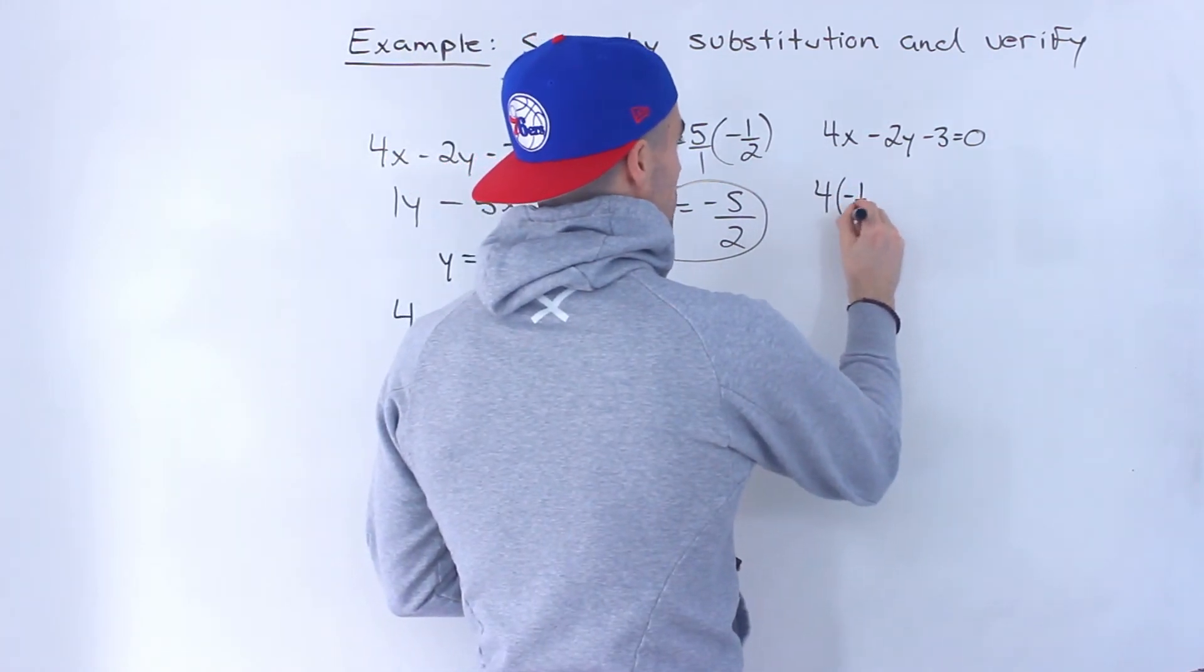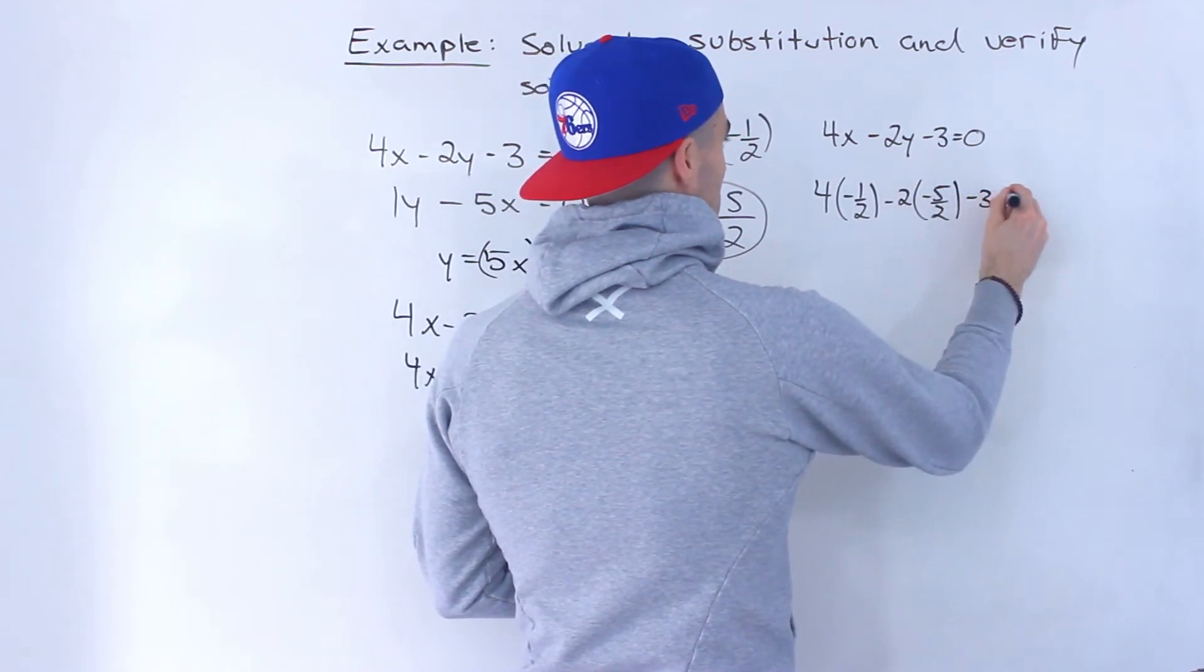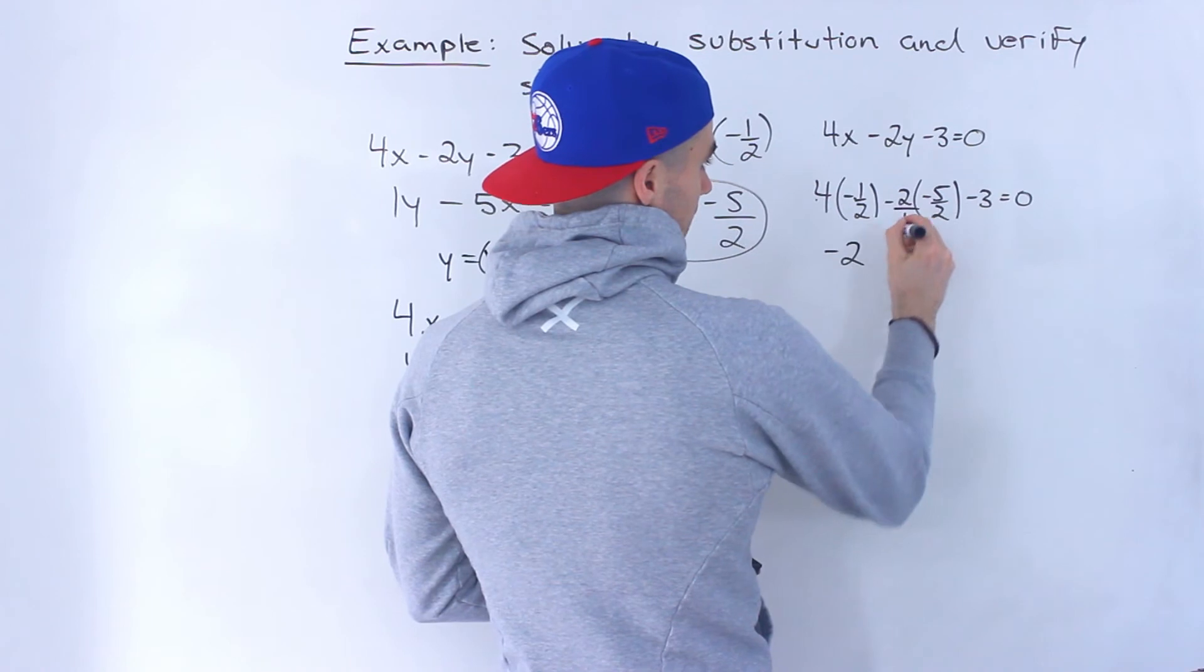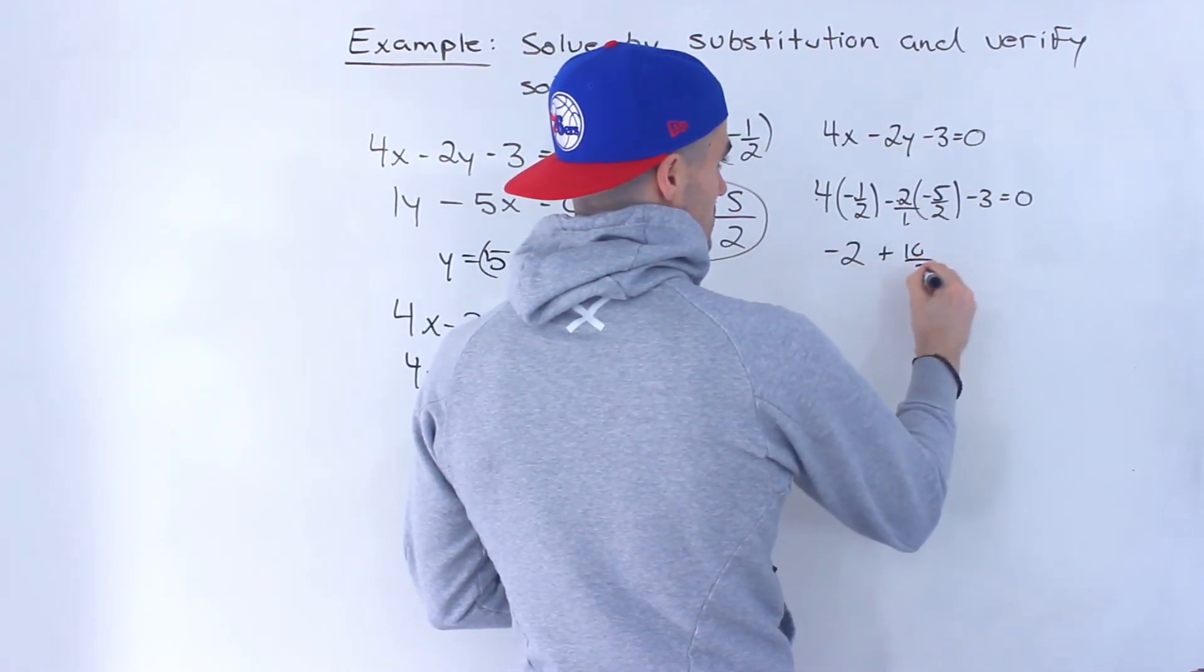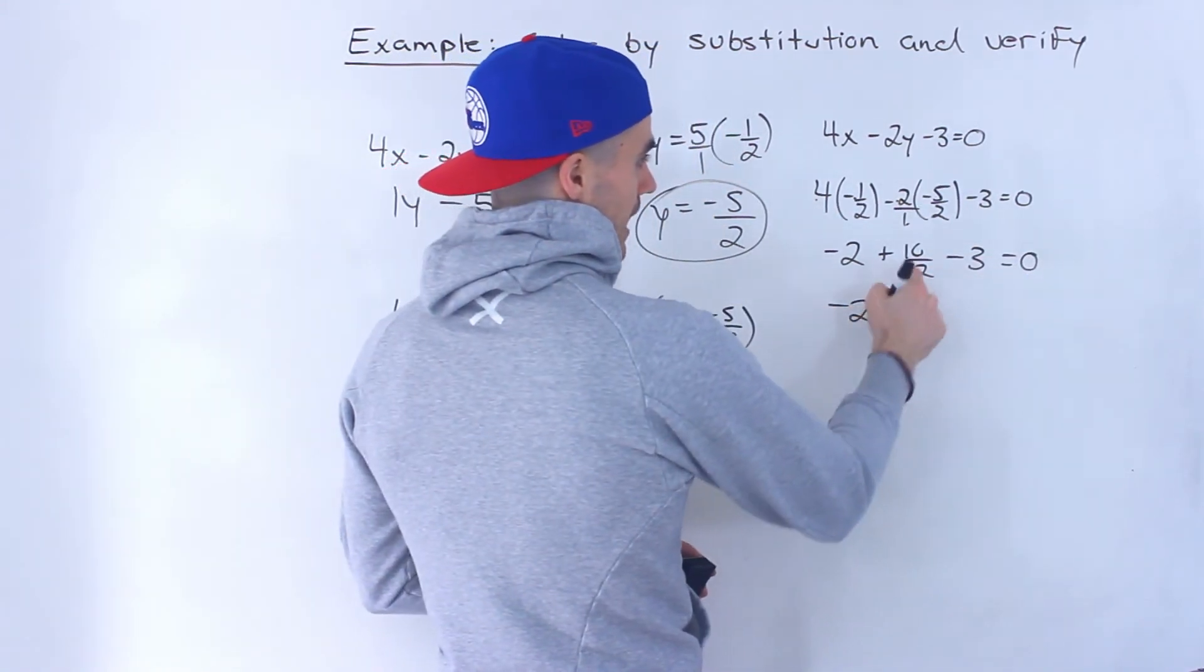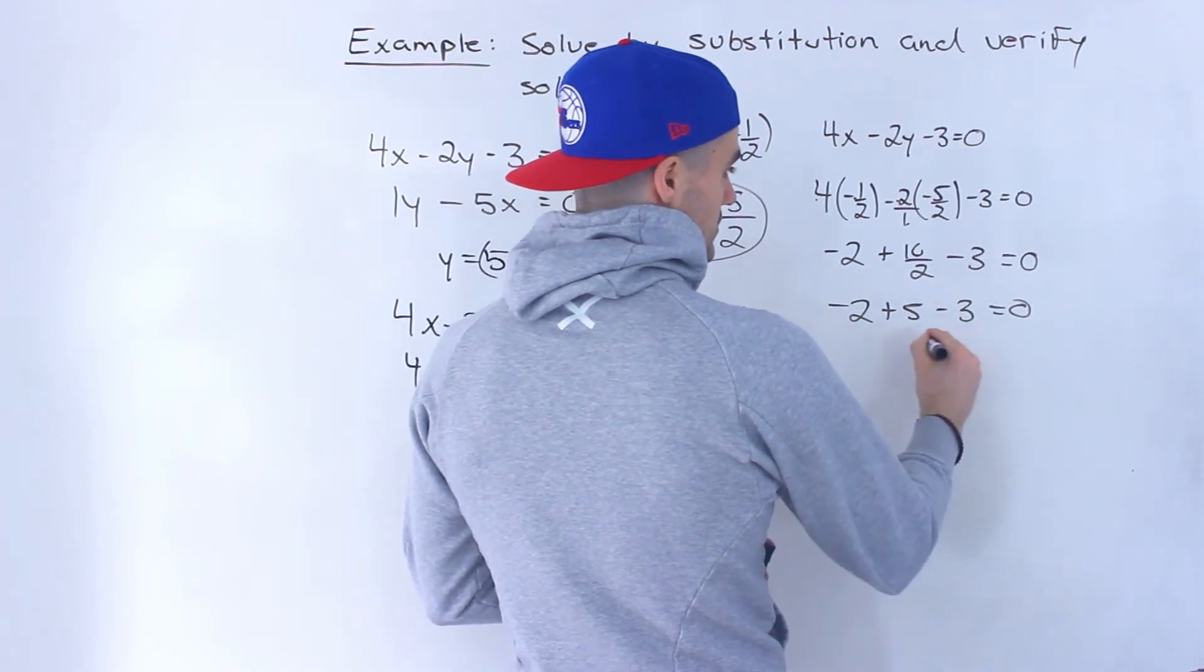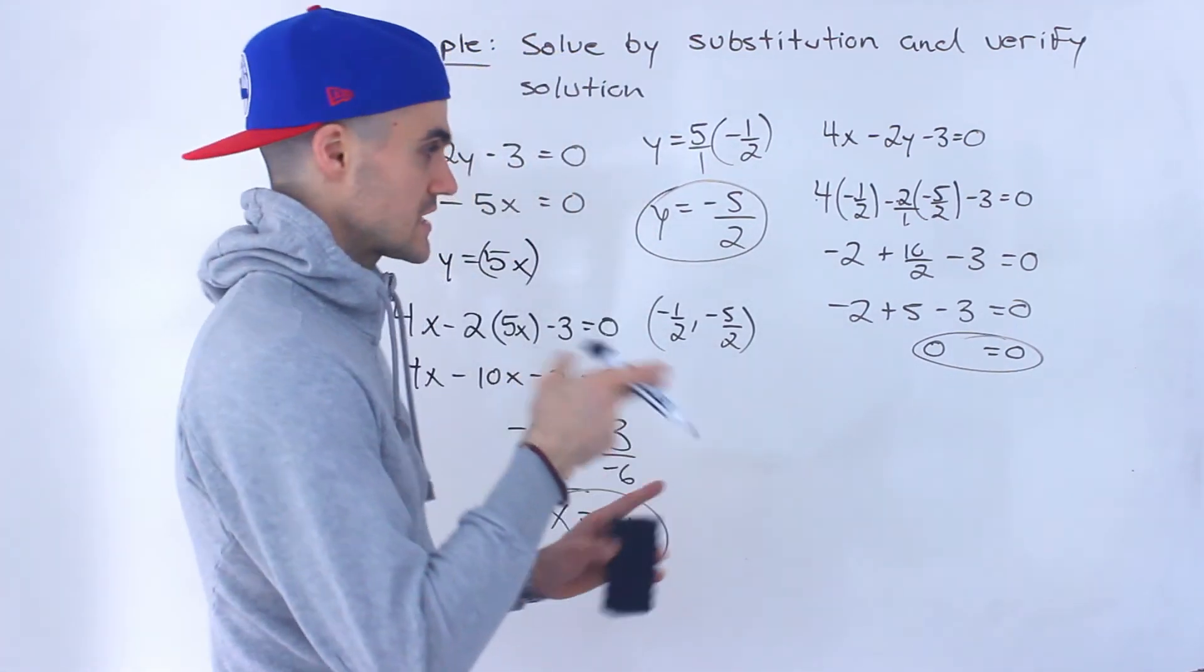So we'll have 4 times negative 1 over 2 minus 2 times negative 5 over 2 minus 3 equals 0. 4 times negative 1 over 2 gives us negative 2. This negative 2 is like negative 2 over 1. Negative 2 times negative 5 gives us positive 10, and 1 times 2 gives us 2. Negative 3 stays as is. Notice that 10 over 2 is 5. So we'll have negative 2 plus 5 which is 3, and 3 minus 3 is 0. So 0 equals 0. Left side equals right side.